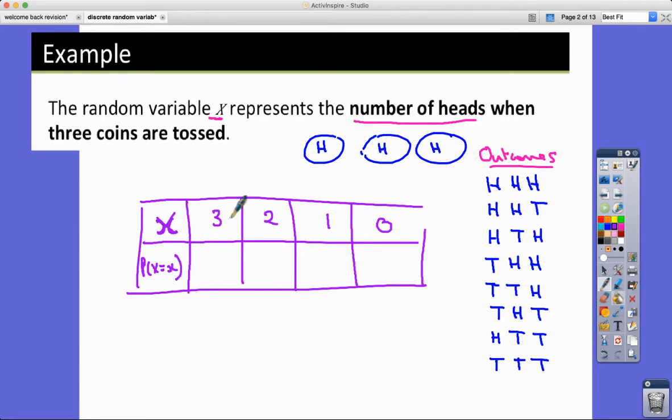Now the probability of getting three heads, so that's one in eight. So assume that these are fair coins, of course. How many of these outcomes have two heads in them? So we've got one, two, three of those, so three eighths. How many of them have one head? Three of them, three eighths. And how many of them have zero heads? Well, that's just the tail, tail, tail. So that's one eighth.